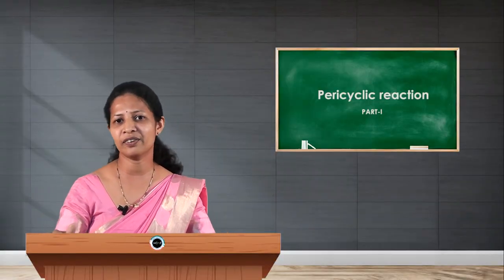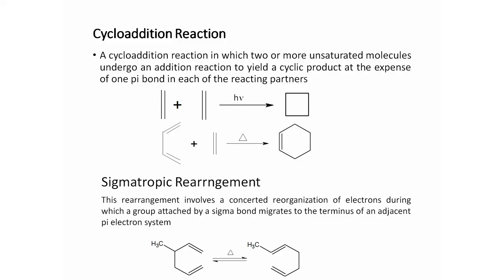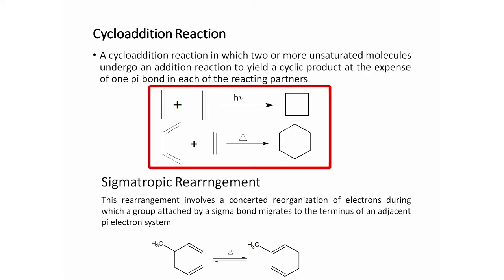The second class is cycloaddition reactions, in which two or more unsaturated molecules undergo an addition reaction to yield a cyclic product at the expense of one pi bond in each of the reacting partners. For example, two ethylene molecules undergo cyclization to give cyclobutane under photochemical condition. Another example is 1,3-butadiene adding with ethylene to give cyclohexene under thermal condition.